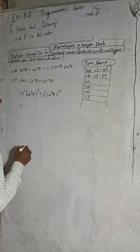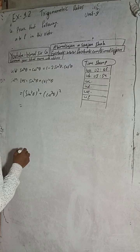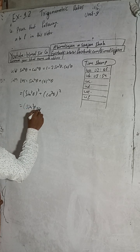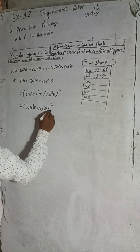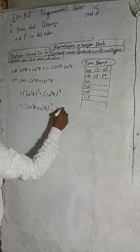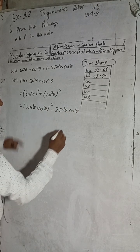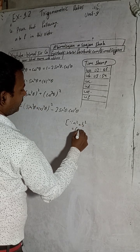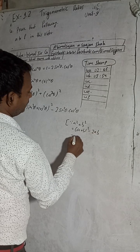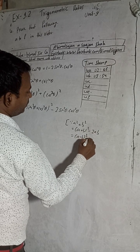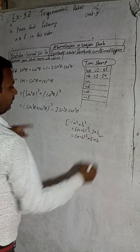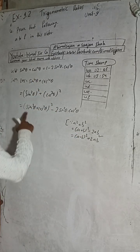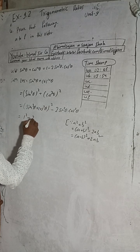Now we apply the formula for a² + b². There are two formulas: a² + b² = (a + b)² − 2ab, and also a² + b² = (a − b)² + 2ab. We apply the first formula because sin²θ + cos²θ equals 1, which is a useful value.